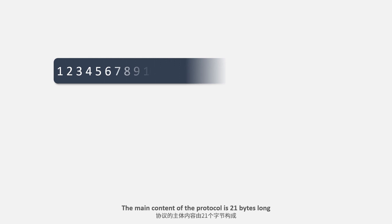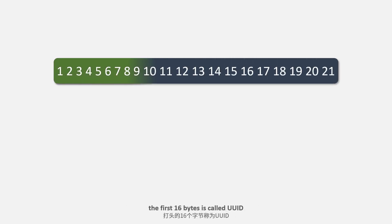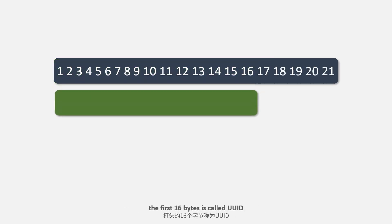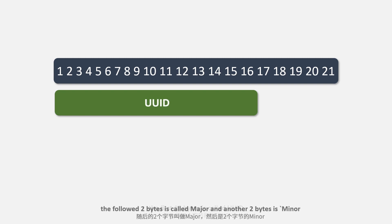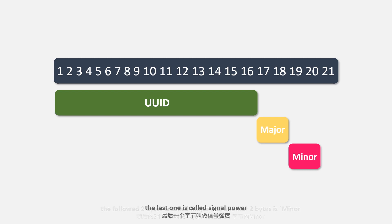The main content of the iBeacon protocol is 21 bytes long. The first 16 bytes are called UUID, followed by 2 bytes called Major, then another 2 bytes called Minor, and the last byte is called Signal Power.